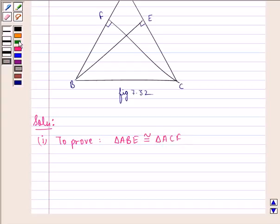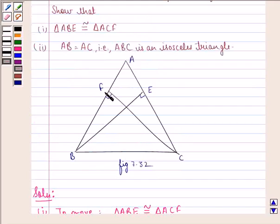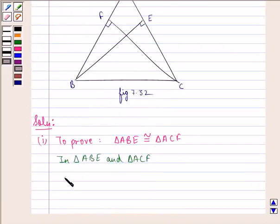So let us consider the triangles ABE and triangle ACF, that is this triangle and this triangle. The first thing that we notice here is that angle A is common in both the triangles. So first we can say that angle A is equal to angle A because this is the common angle.